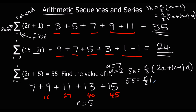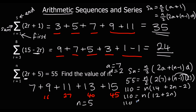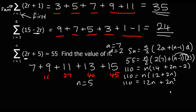So fifty-five equals n over 2 times (two sevens plus (n minus 1) times two). I'll get rid of the divide by two by multiplying both sides by two: one hundred and ten equals n times (fourteen plus two n minus two). Expanding the bracket: one hundred and ten equals n times (twelve plus two n), which gives one hundred and ten equals twelve n plus two n squared. We've got a quadratic, so to solve it we need to make it equal to zero. Writing the n squared term first: two n squared plus twelve n minus one hundred and ten equals zero.